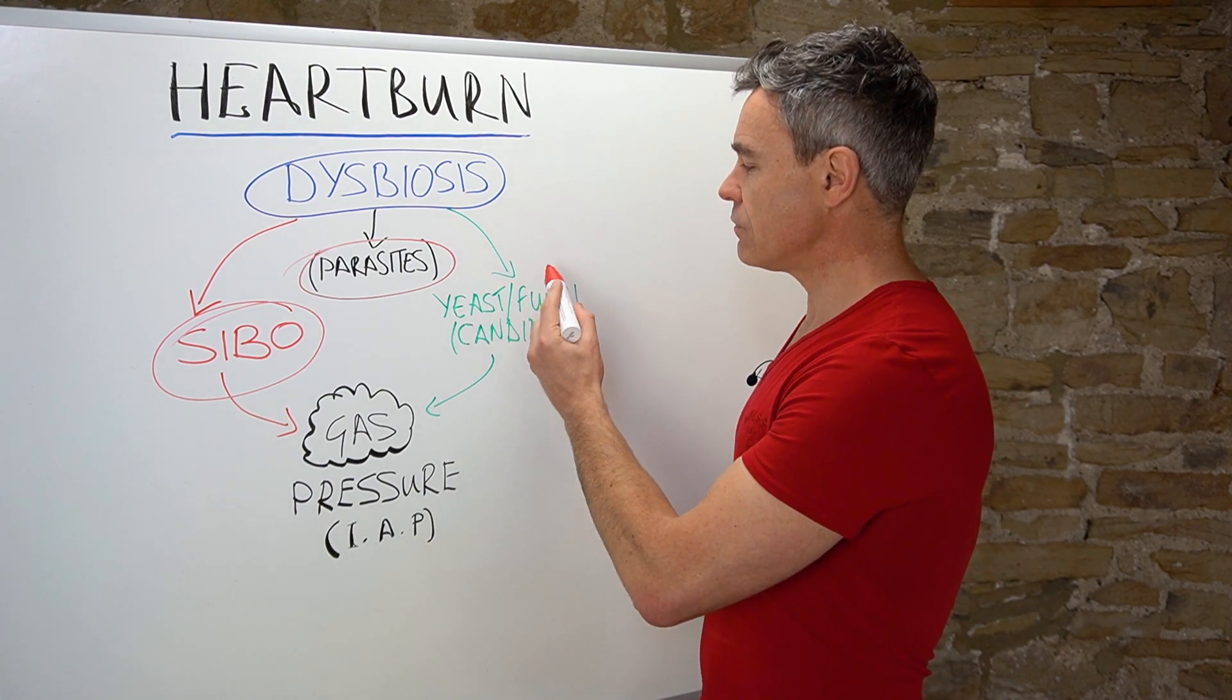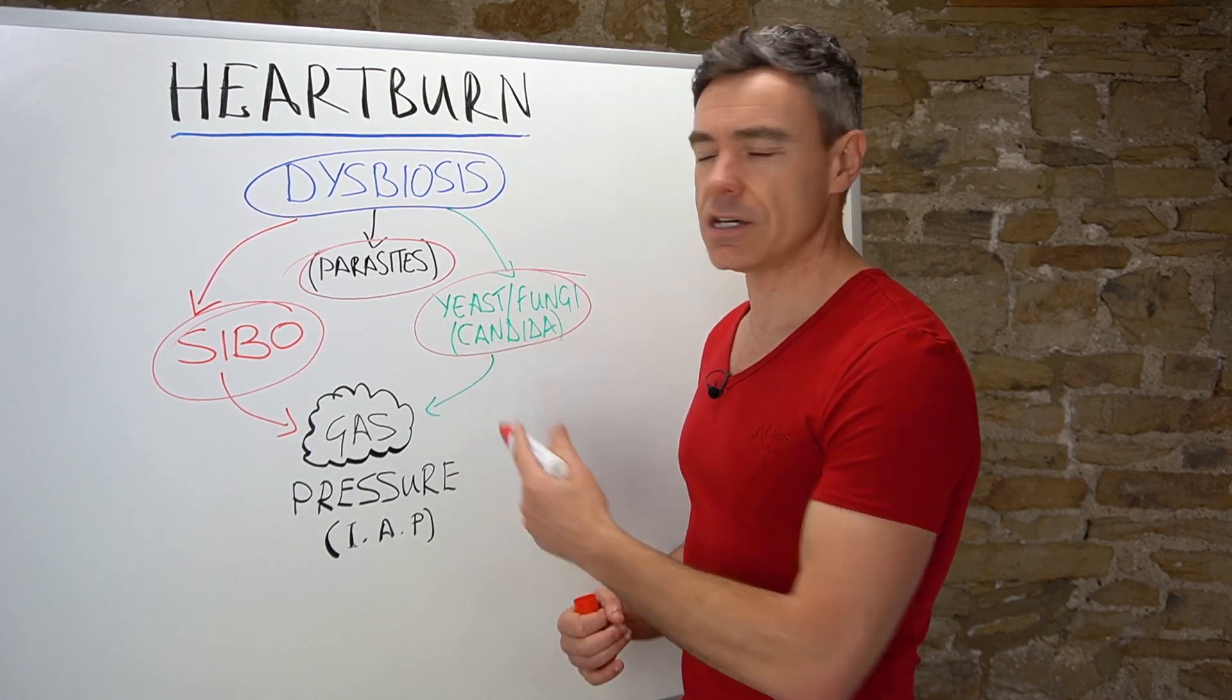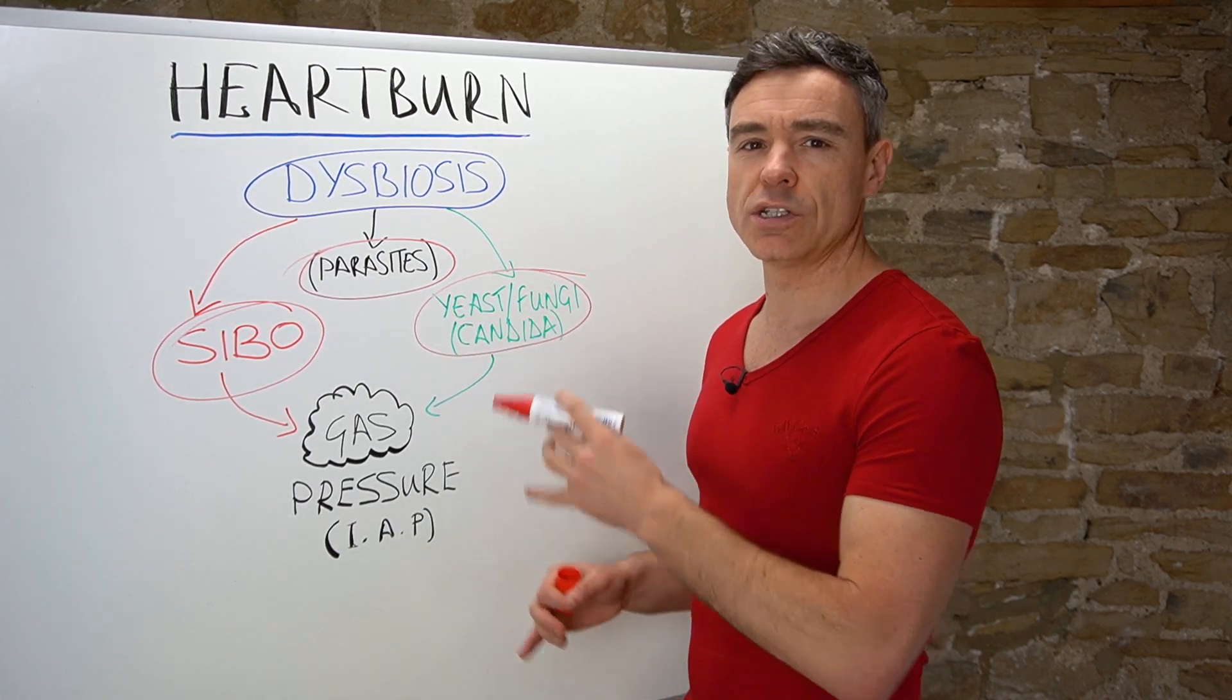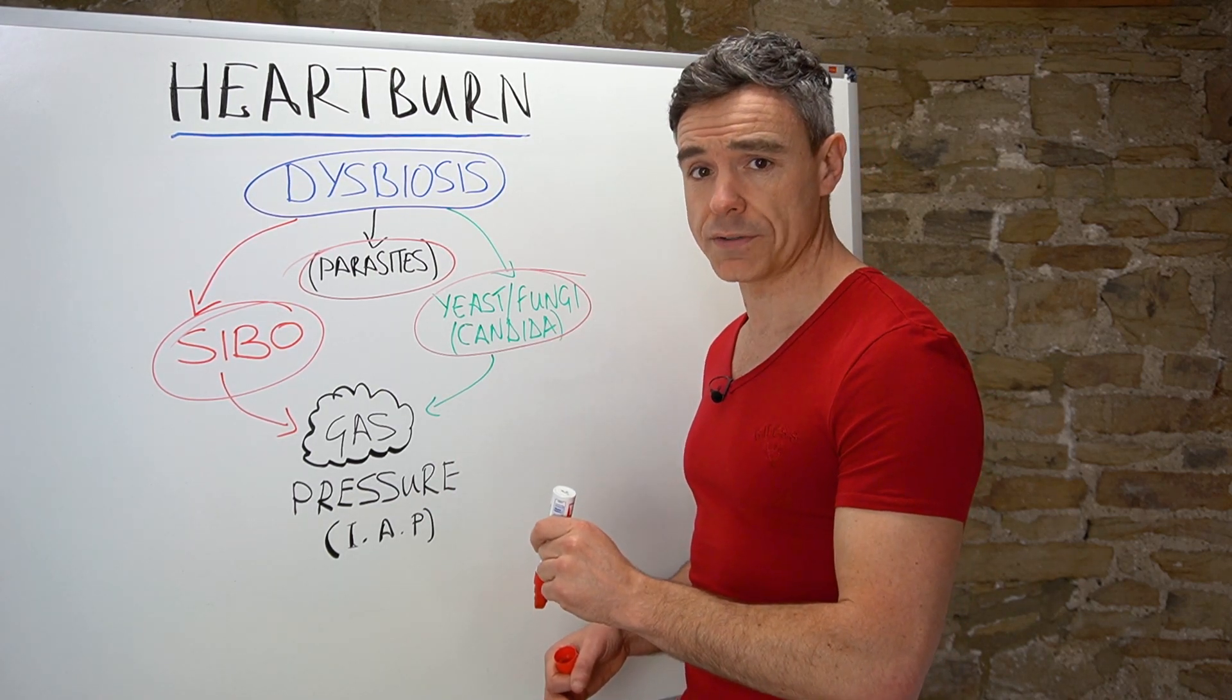There's also yeast and fungal overgrowth, most commonly known as candida, but candida is not the only yeast and fungal organism that can overgrow in the digestive system. There's actually quite a few different ones.